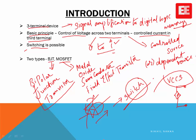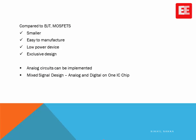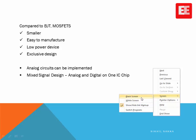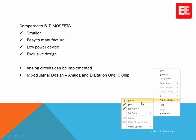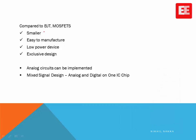BJT was the first generation of three-terminal devices, and then came the MOSFET. Compared to BJT, MOSFETs are very much smaller in size, meaning on a single IC you can reduce the chip size to realize the same operation. The manufacturing process is also simpler. MOSFETs are low-power devices, so system efficiency is higher, heat dissipation is less, cooling requirements are less, and the overall cost and size of the system is lower.